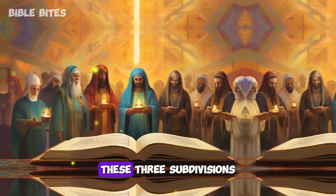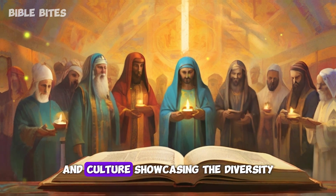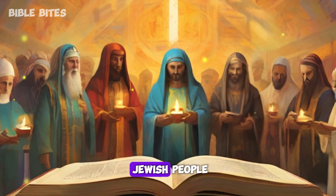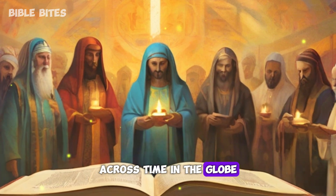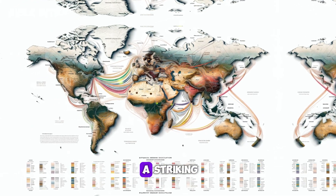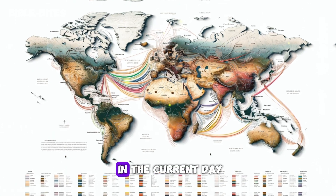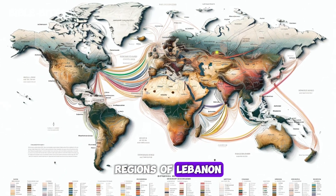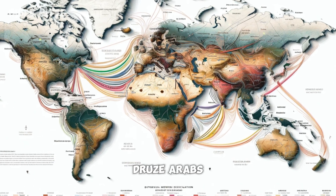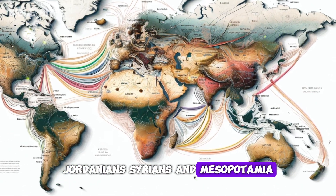These three subdivisions represent only a fraction of Jewish history and culture, showcasing the diversity and resilience of the Jewish people across time and the globe. Several Jewish groups exhibit a striking genetic proximity to populations in the current-day regions of Lebanon, Palestine, Bedouins, Druze, Arabs, Jordanians, Syrians, and Mesopotamia.